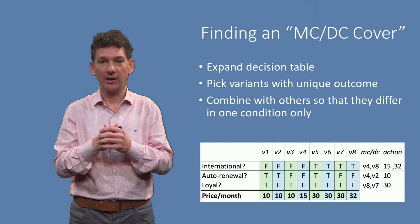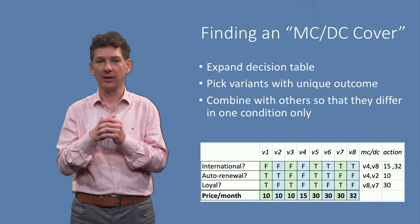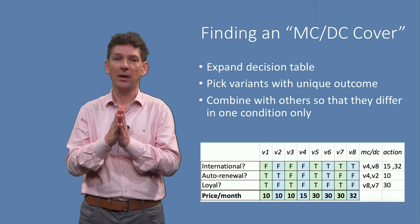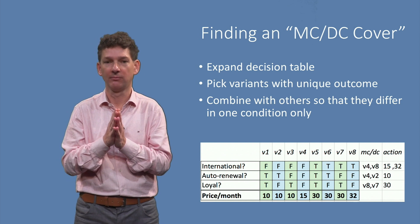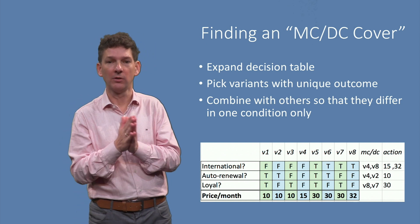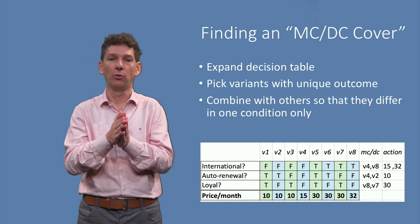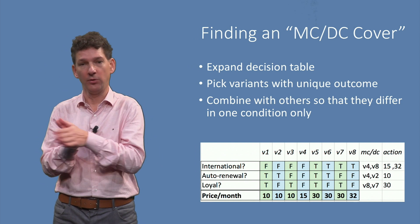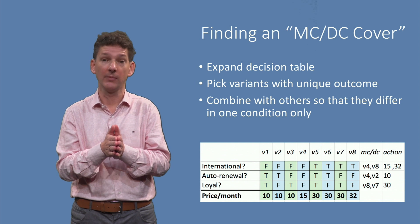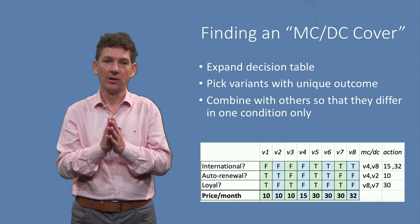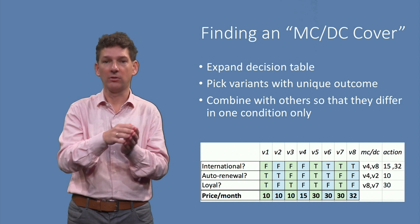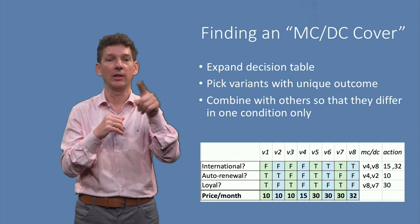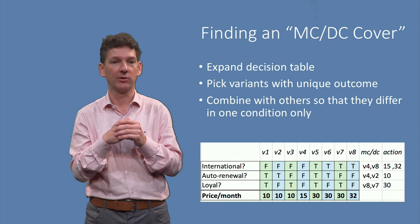Last but not least, let's check the third condition. While we could again take v4 as a starting point, this would lead us to v3, which has the same outcome as v2, namely 10. We do need to cover every different outcome, and we have no test with outcome 30 yet. Therefore, we start from variant v8 instead, and flip the third condition, so that we end up with outcome 30 as well. Thus, with four test cases, we have not just covered the four outcomes, but also carefully crafted our test cases so that each condition at least once independently determines the outcome.